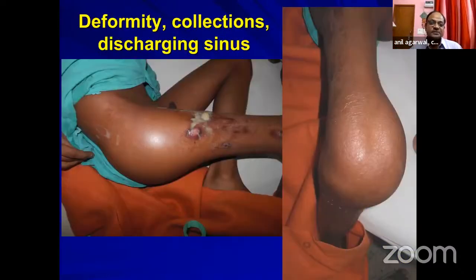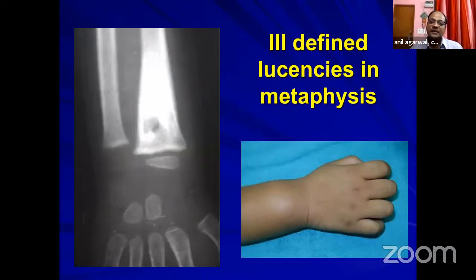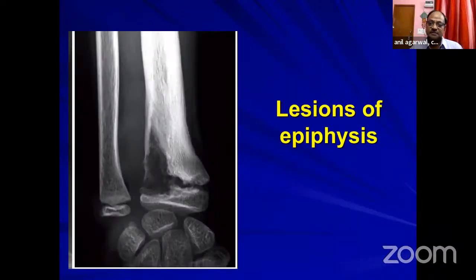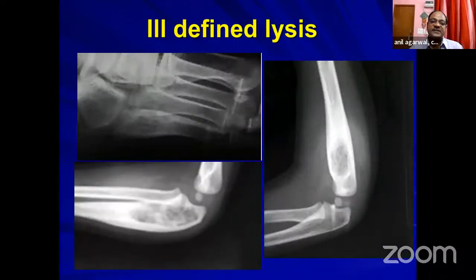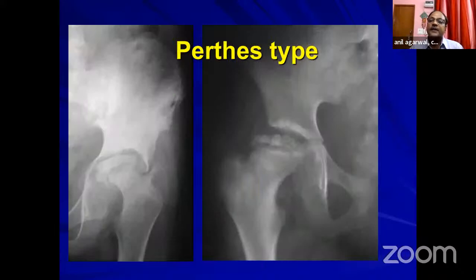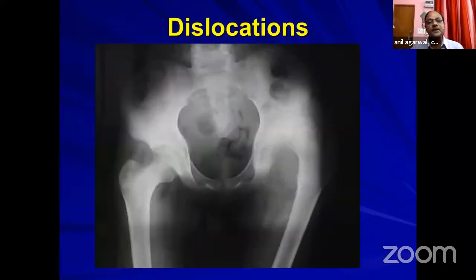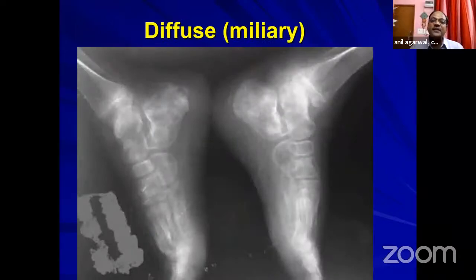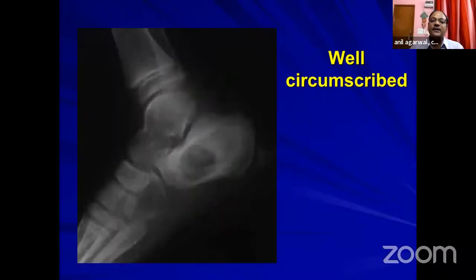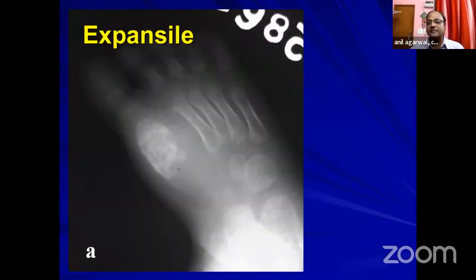Let's begin by sharing a few examples. This is a classical case of tuberculosis: pus is oozing out, there is swelling, contracture, and deformity. But you can have much more than that — ill-defined lesions, epiphyseal lesions, lesions with a sequestrum, ill-defined lucencies in bone, a perthe's-type presentation in the hip, dislocations, a malignancy-type presentation with bacteria throughout, well-circumscribed lesions in the calcaneum, and expansile lesions in the metatarsals.